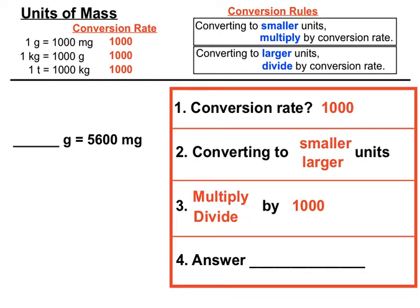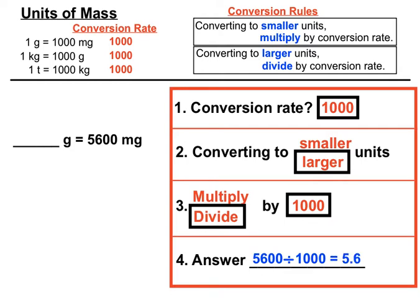Converting this time from milligrams to grams, the conversion rate is a thousand again. Going from milligrams to grams, we're converting to larger units, which means we're dividing by that conversion rate. So we divide by a thousand and get 5.6. The decimal point on 5,600 would be at the end, so dividing by a thousand moves the decimal point three places to the left, giving us 5.6 as our answer.